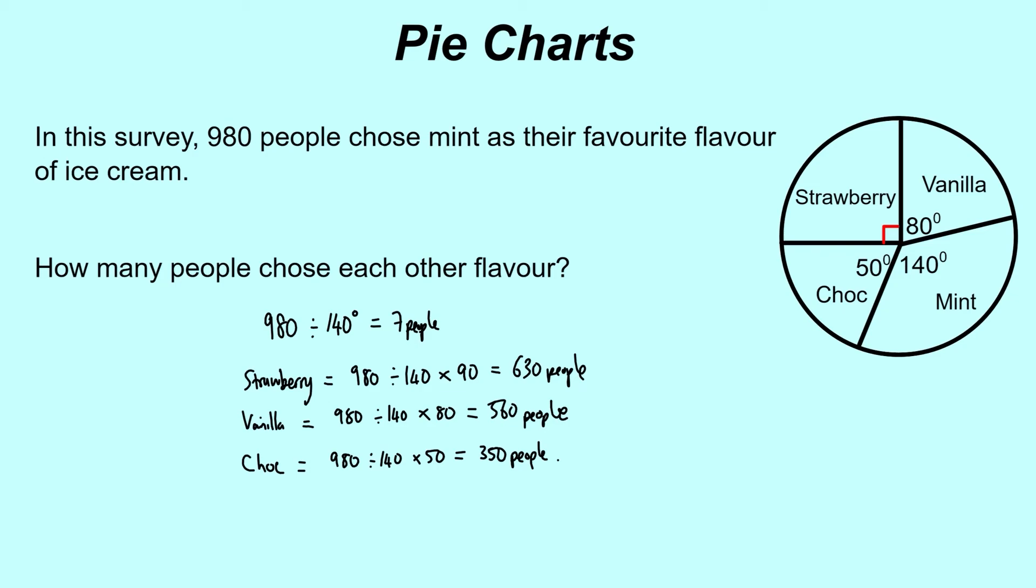All together we had 980 people choosing mint, 630 people choosing strawberry, 560 choosing vanilla, and 350 choosing chocolate. It's a slightly different approach to how you can use information in pie charts. There's lots of different ways you can use the information you're given in pie charts, and there's also different ways it can be presented.